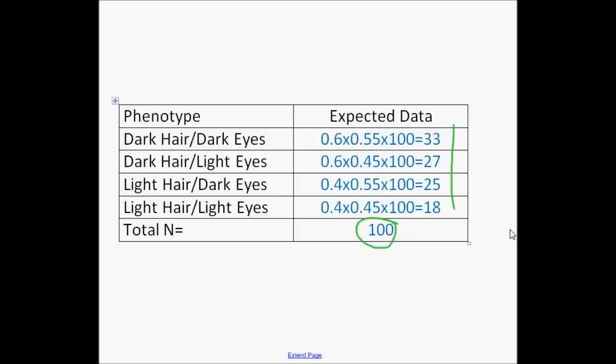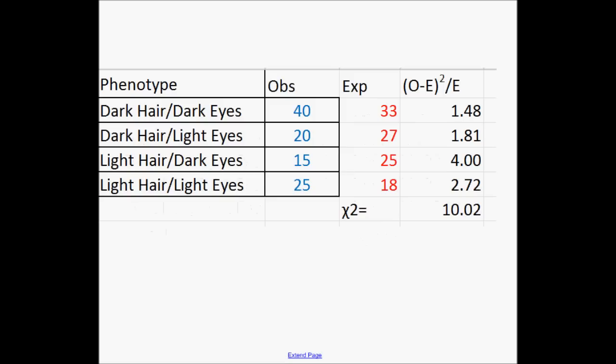And once again, those numbers all add up to 100. So now I have both my observed data and my expected data. Now we're going to go ahead and plug these in and do the chi-square analysis. So here's my four phenotypes. Once again, degree of freedom in this particular case would be 3. This was my observed data based on my one-gene analysis. These are my expected numbers. I went ahead and just plugged in another column here to do the calculations. Here are my numbers. Add them all up and gives me a chi-square of 10.02.